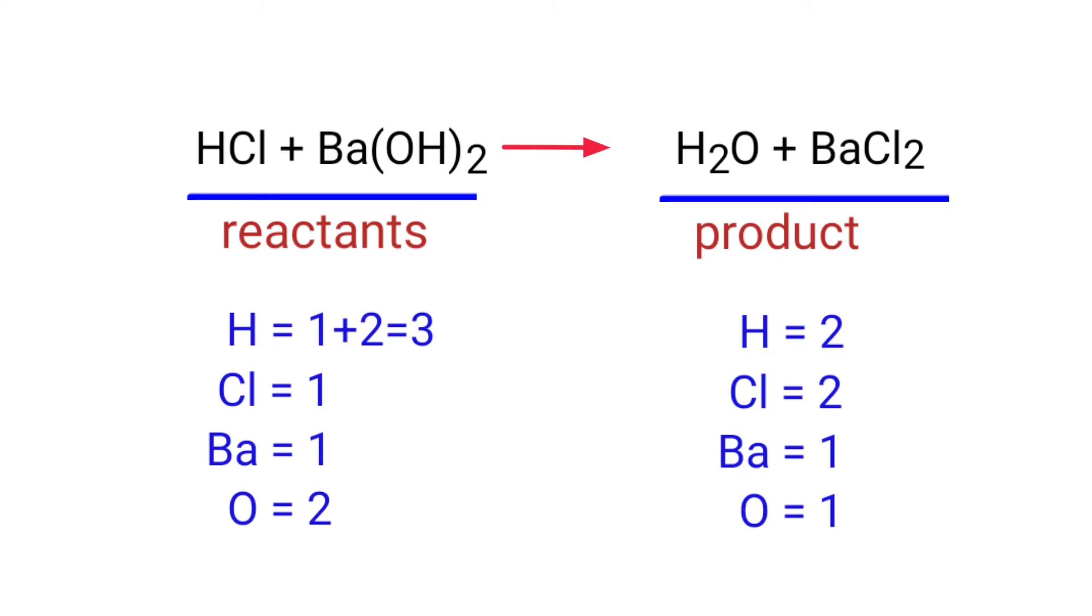These are not balanced on both sides. To balance the chemical equation, we need to make use of coefficients. A coefficient is a number that we place in front of a chemical formula.